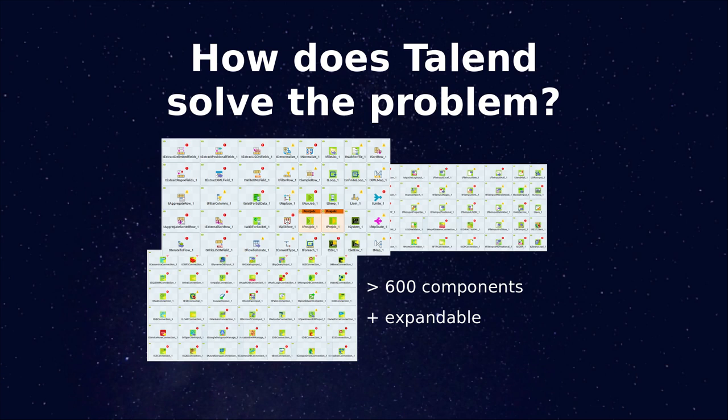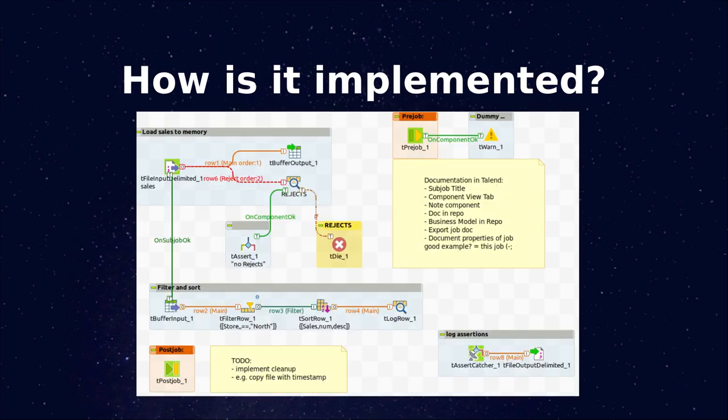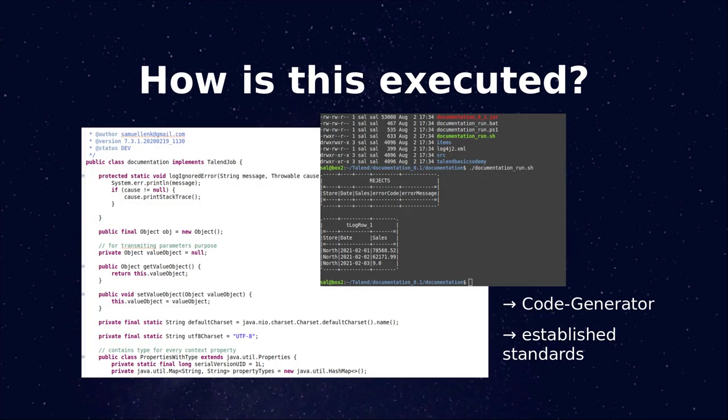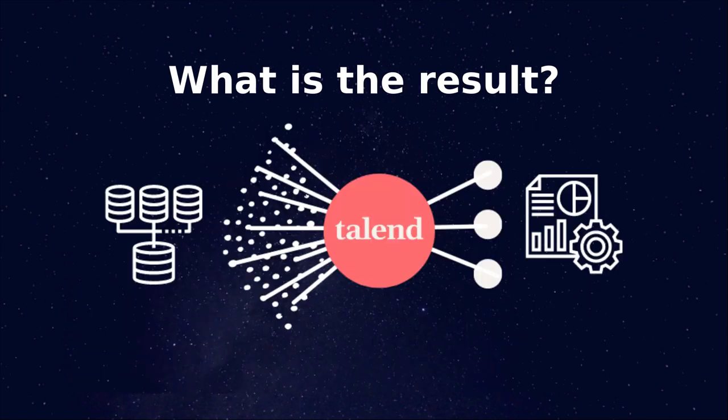Talend solves this problem by supplying us a Talend Open Studio with over 600 components out of the box. But this is also expandable — it can be expanded by your own components or by components already made by others. And then, in the end, you can build this kind of graphical processes to integrate your data. But behind the scenes, actually, Talend is creating some Java code for you, which can be executed on any platform using very well established standards.